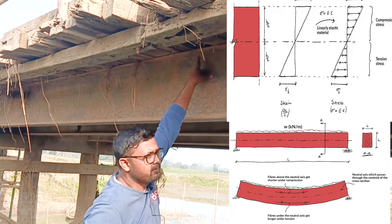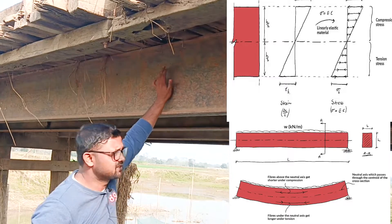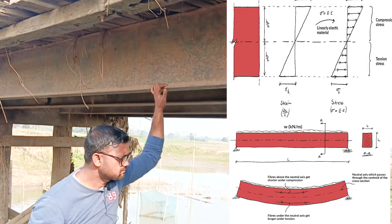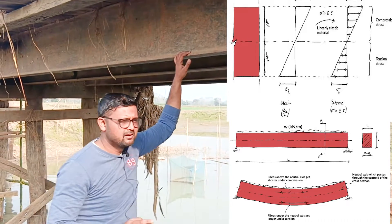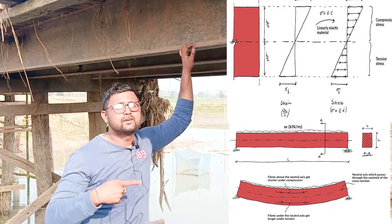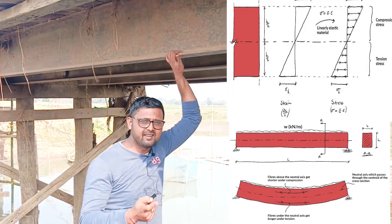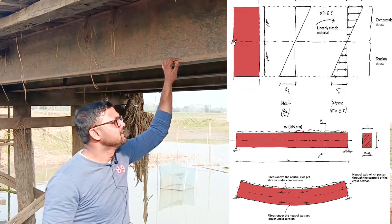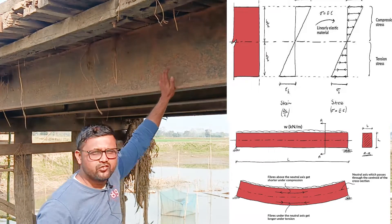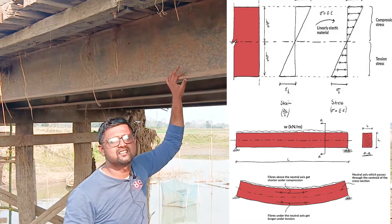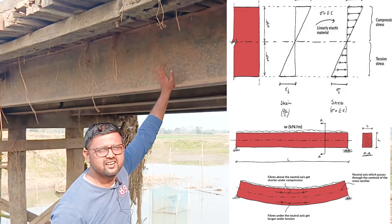At the top — you can see my finger at the top — there will be bending compressive stress. Now, wood cannot take a good amount of bending tensile stress. Wood is a compressive material. But steel can take a good amount of bending tensile stress. So if we put wood instead of steel here, the wood will fail in bending tensile stress, but steel doesn't fail. That is why we have put a steel girder.